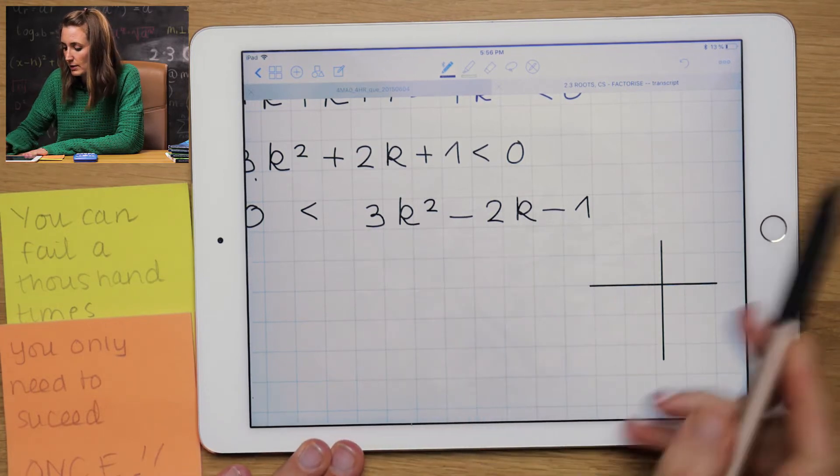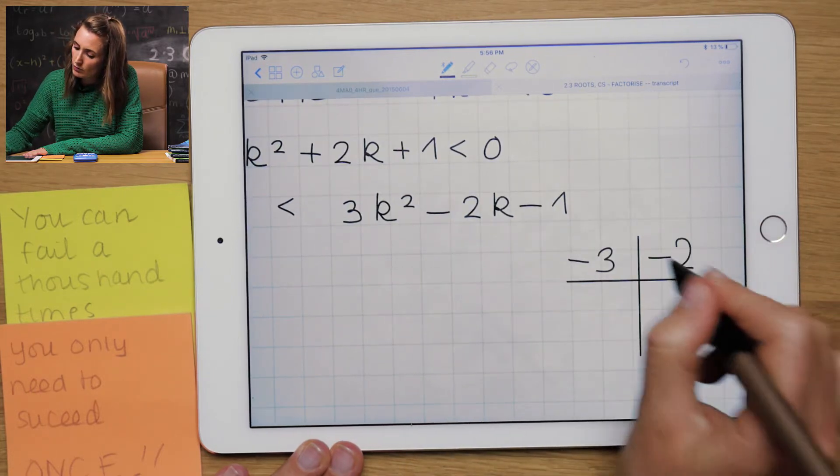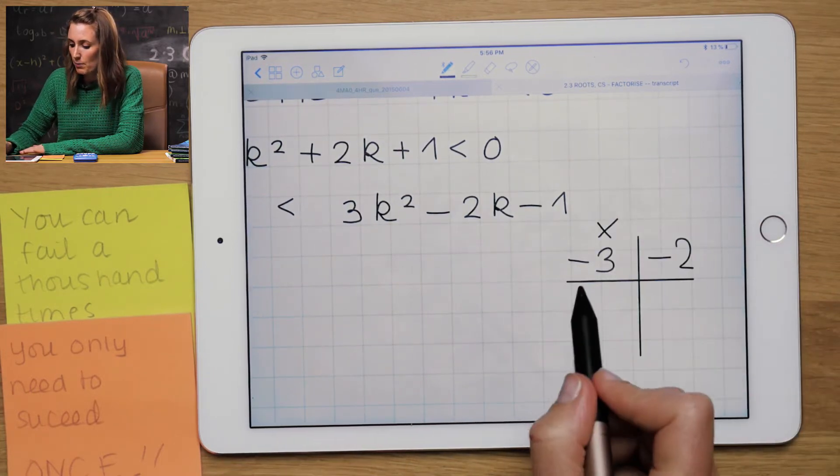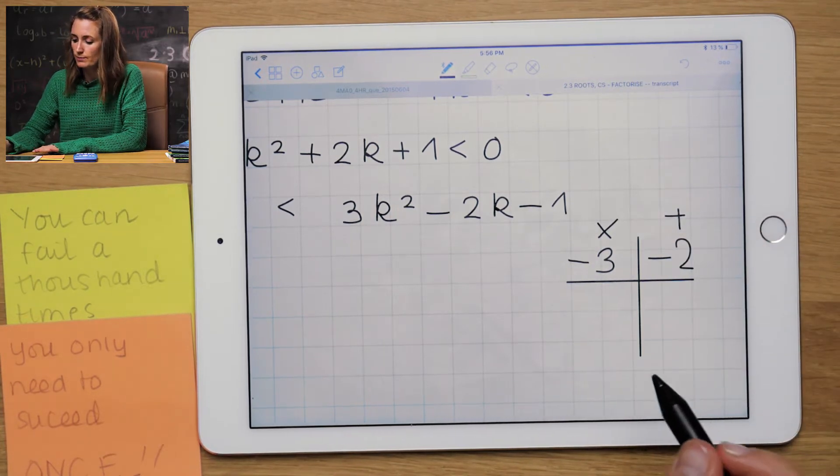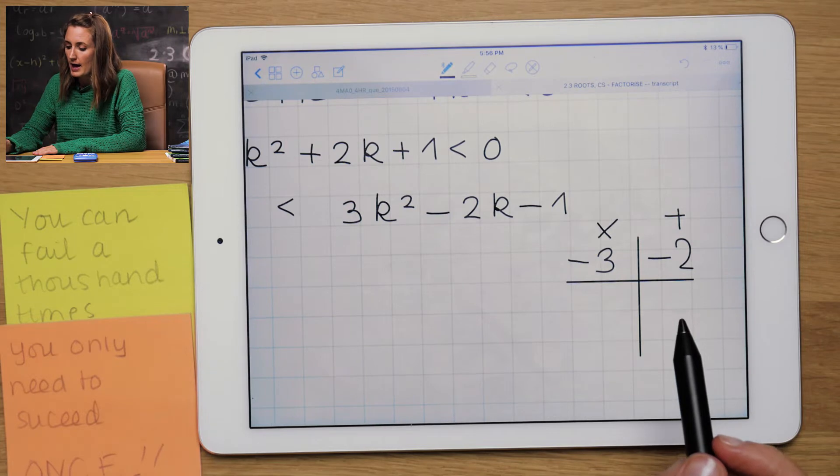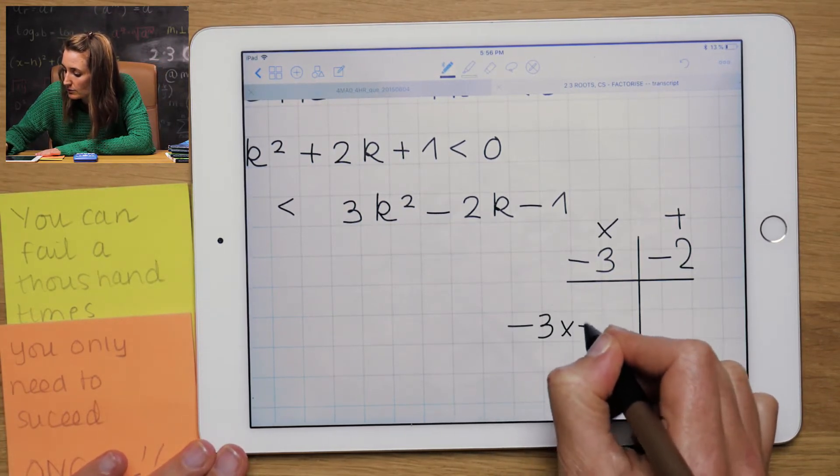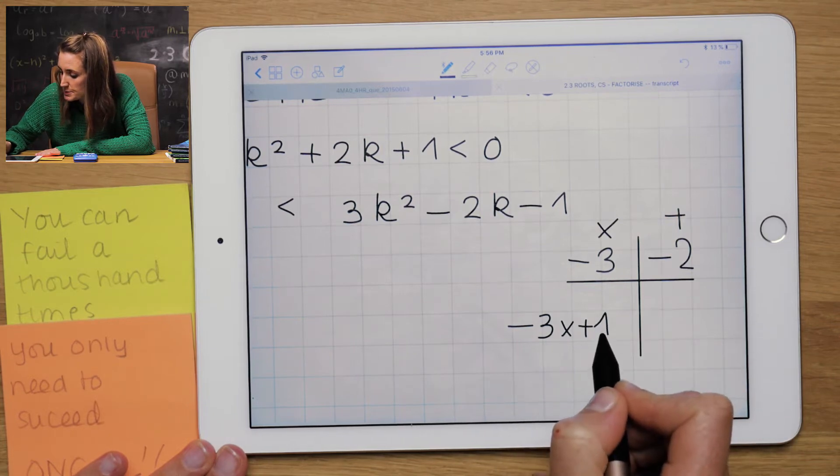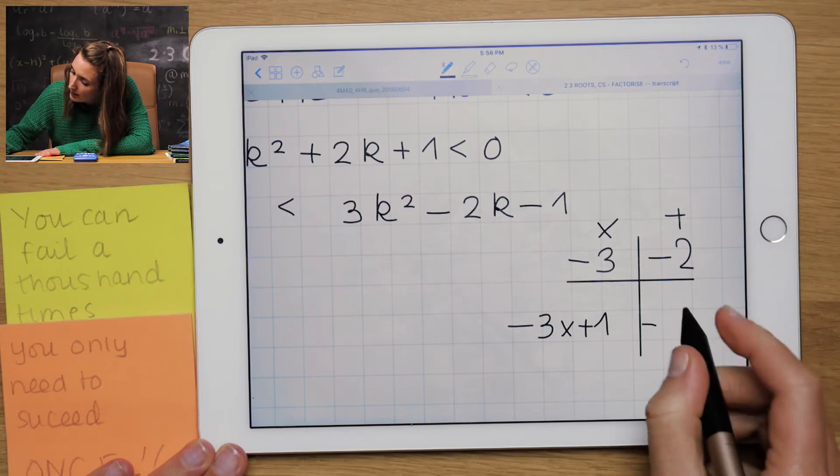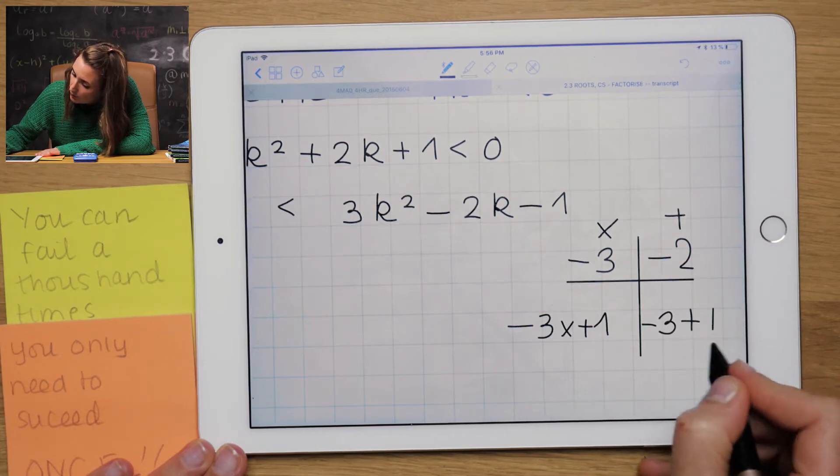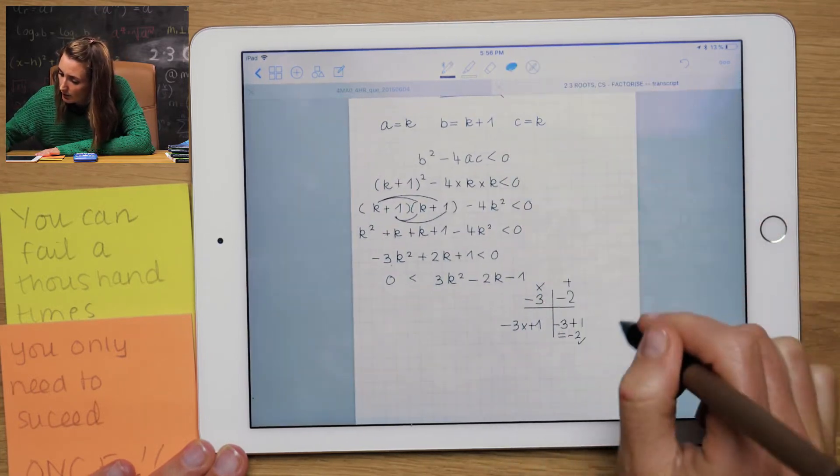But don't forget because I moved it across the inequality, just like the equal sign, I need to change the signs. So that minus has gone to a plus. The plus is gone to a minus and the plus is gone to a minus. I need to factorize it. So 3 times minus 1 is minus 3 and I need minus 2. So I need two numbers that multiply for minus 3 and add up for minus 2. So I'm going to have minus 3 times plus 1.